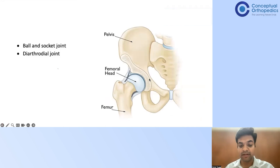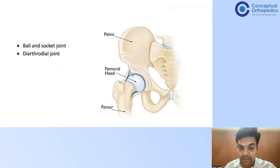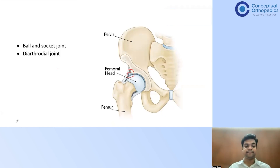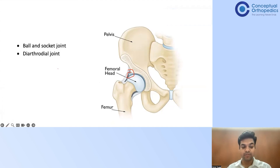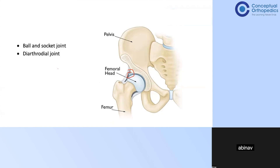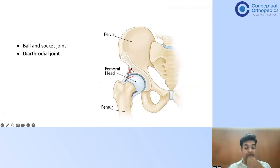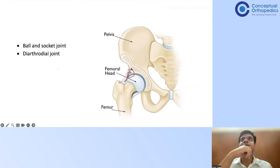Apart from the ligaments, there is another very important structure — the labrum. What is the importance of the labrum? It increases the surface area of contact and basically deepens the cup. The labrum is critically important for stability of the hip joint.